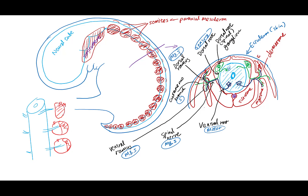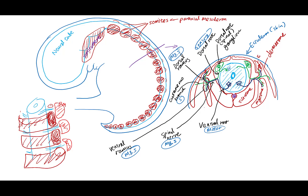As the ventral root is growing out towards the dermomyotome, the sclerotome is splitting into cranial and caudal segments. And when this happens, the bottom half of the cranial sclerotome and the top half of the caudal sclerotome will end up fusing with each other. And as the right and left sclerotomes come together to surround the neural tube to form the vertebral bone, the sclerotomes have become rearranged in between the two original somites. This process of splitting and rearranging of sclerotomes to form the vertebral column is called resegmentation.